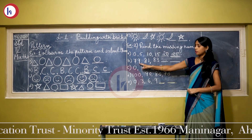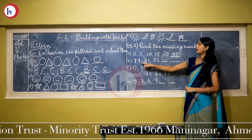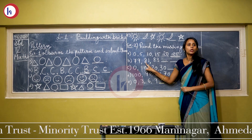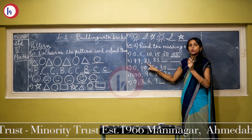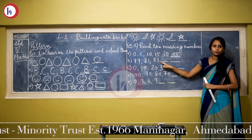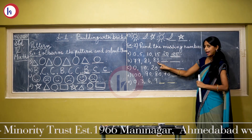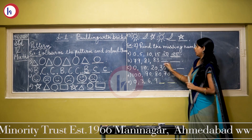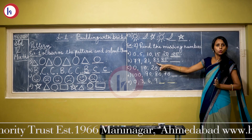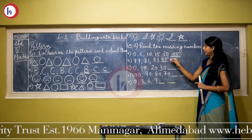Now come to the next: the first number is 79, then 81, then 83. The difference between 79 and 81 is 2, and between 81 and 83 is also 2. So to find the next number, we add 2 to 83: 83 plus 2 equals 85. And the next number: 85 plus 2 equals 87. In this way, we complete the sequence.